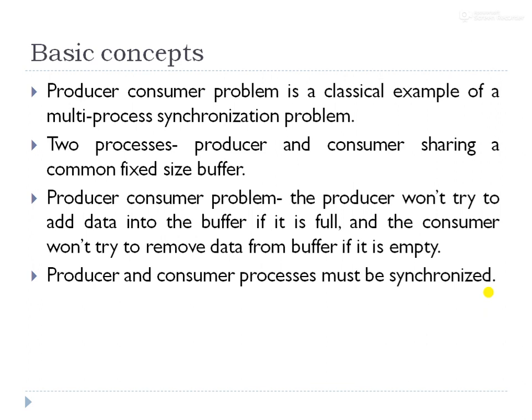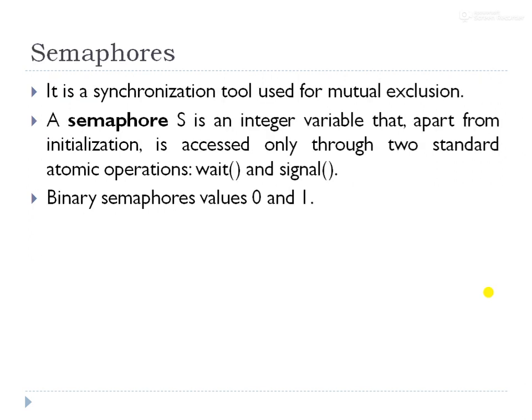Several synchronization tools are used for solving the producer-consumer problem, of which the semaphore is one effective tool. A semaphore is used for mutual exclusion. We can give it an initial integer value, and it can be accessed only through two standard atomic operations: wait and signal. The wait operation decrements the semaphore value, and the signal operation increments it.